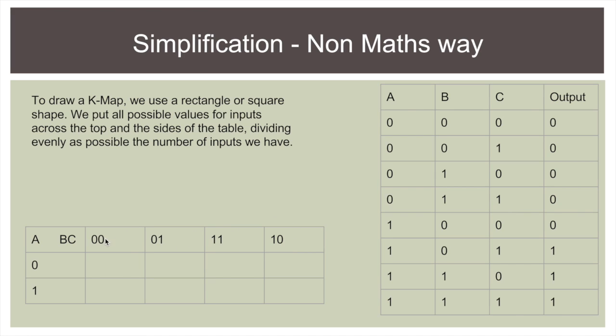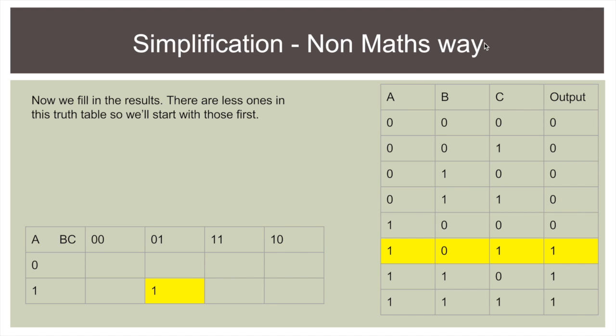It's a little bit different but just so you remember: 0 0, 0 1, 1 1, 1 0. Okay, so now we start to fill in the results. As there are fewer ones on the table, we'll start with those first.